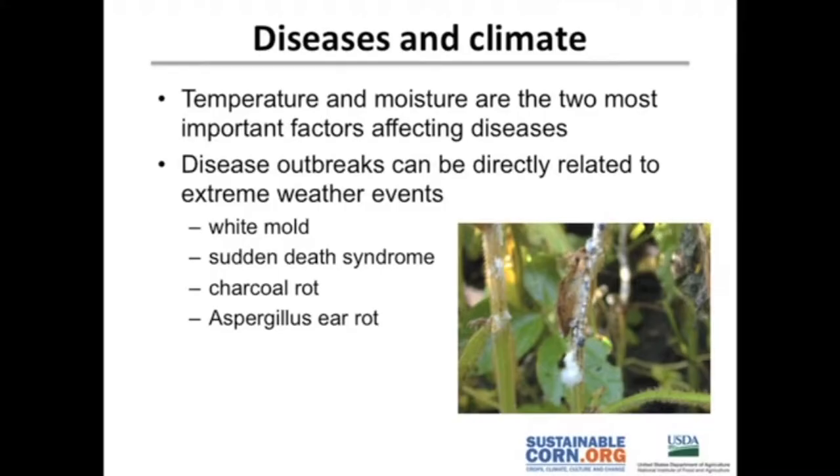The first one is that pests can be affected by climate, and that's probably a no-brainer, but there are several different ways it can happen. We'll start with diseases. The driving factors for plant pathogens and subsequent disease are going to be temperature and moisture as far as the environmental conditions.